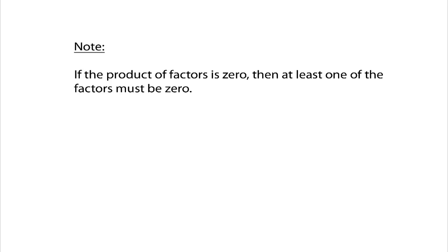If the product of factors is zero — in other words if you have a whole bunch of things being multiplied together and that product is equal to zero — then at least one of those factors must be zero. Because zero times whatever else is going to be equal to zero. In math symbols it would look like the following.